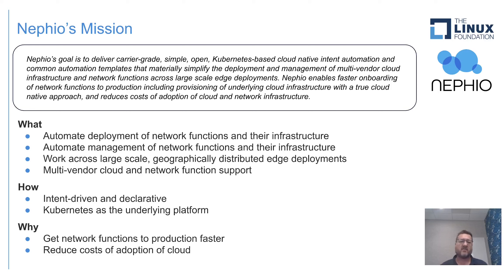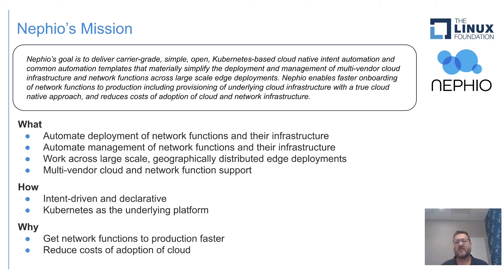Lastly, the why. Two big whys. One is to get network functions to production faster. When lead times are in months or years to get a network provisioned, the level of agility in an organization — the ability to adapt to market conditions — just isn't there. When we say faster, we don't mean cutting it from six months to four months. We want to cut it from six months to two days or hours. We want to cut it down dramatically. It's ambitious, but as a community, we think we have a real shot at it.